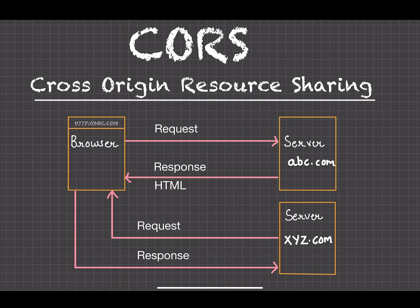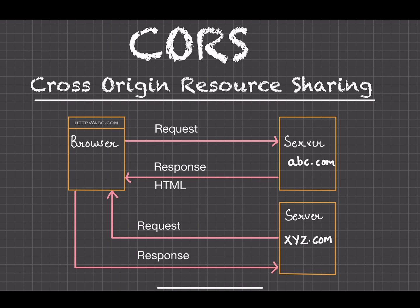Suppose you are the owner of abc.com and there is another website xyz.com whose service you want to use. You can write code in your file that makes a request to the service of xyz.com without the permission of the owner of that server. So the browser implements the same-origin policy — without the permission of the owner of xyz.com, you cannot consume its service.